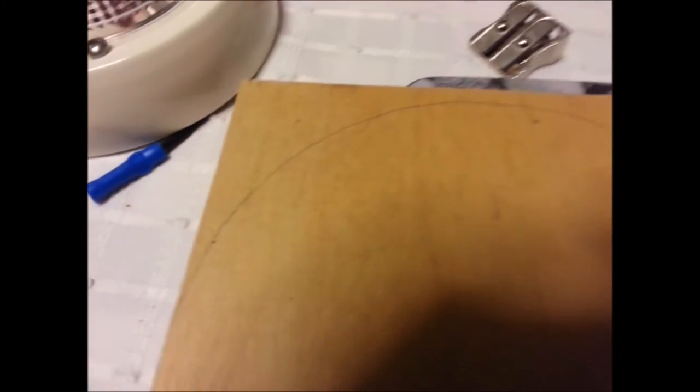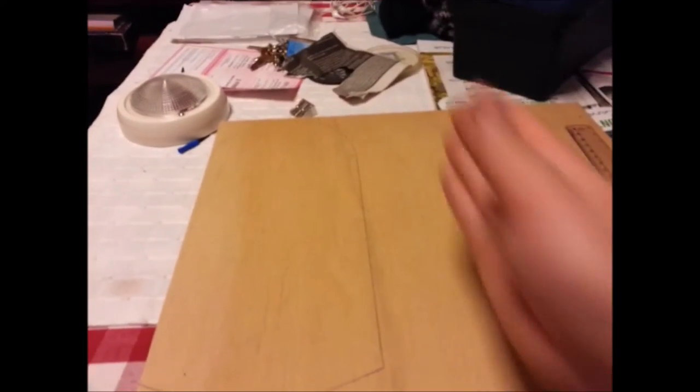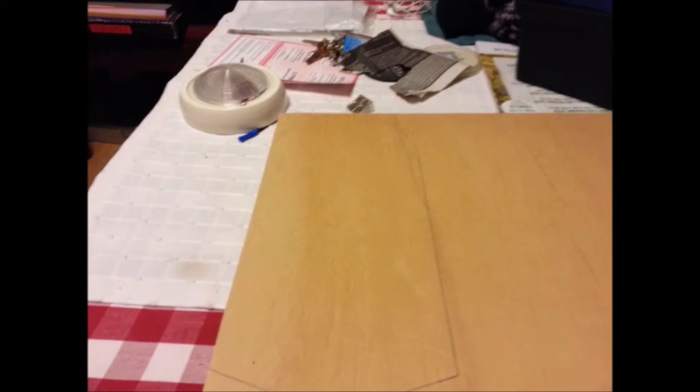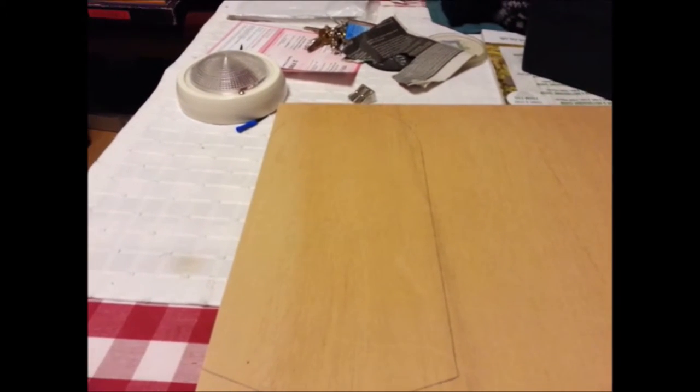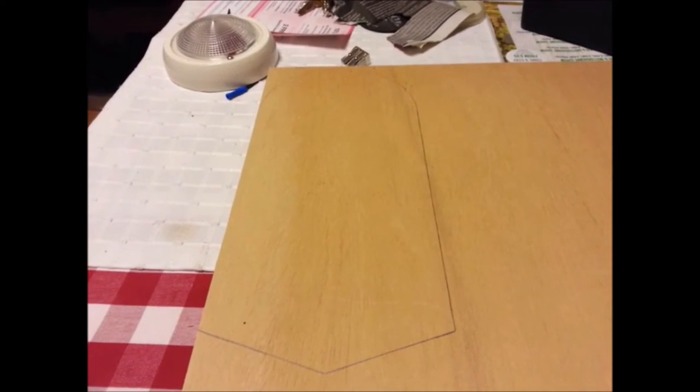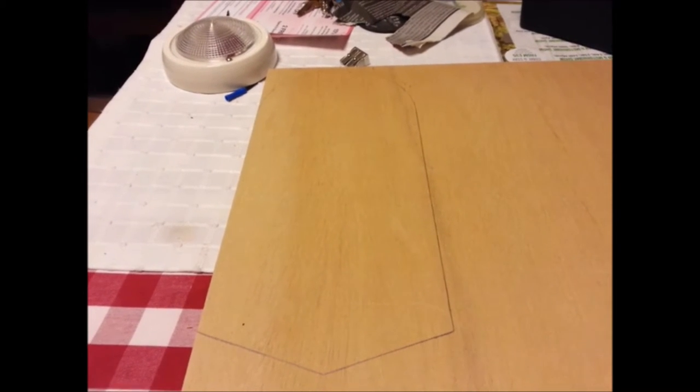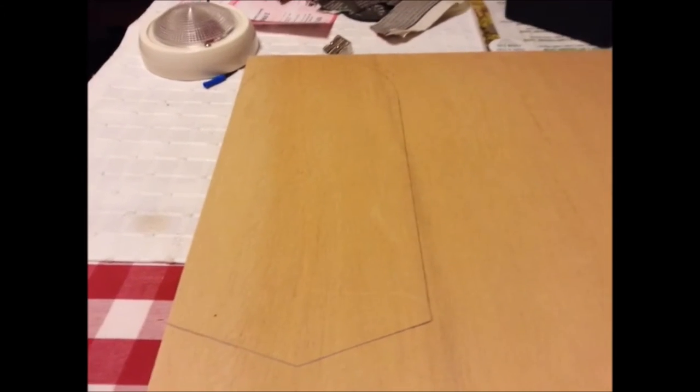Okay, there you can see I've drawn the lines on. I'm ready to cut. What I'll probably do is cut this piece of wood in half, put the two, G clamp them together, and then I can saw the both of them at the same time.